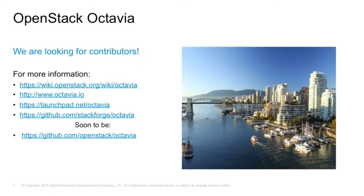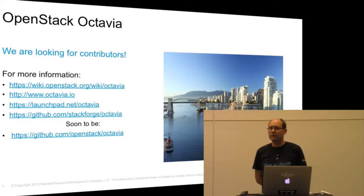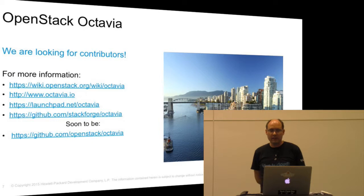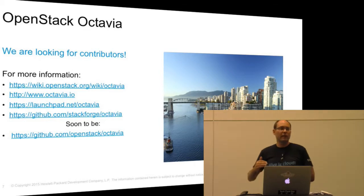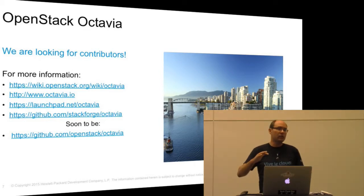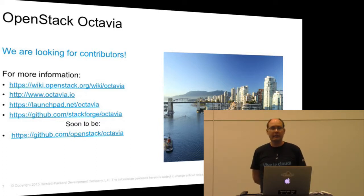So that was a lot — this is our last slide. We're always looking for contributors; we want to be the biggest load balancing project in the world, so we need lots more people. We have a wiki, Octavia.io for documentation and specs, and a Launchpad for bugs. We're currently on Stackforge Octavia on GitHub, but we've been approved to move to OpenStack Octavia — we just didn't do it before the summit to avoid distractions. And that was OpenStack Octavia. Thank you for listening!